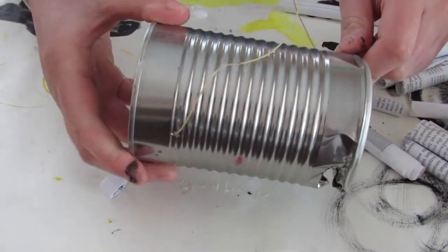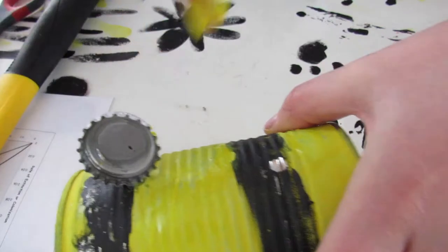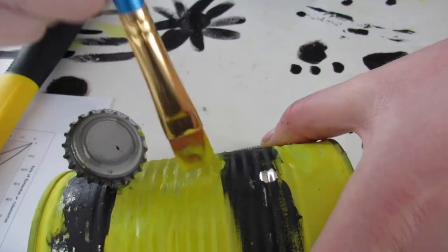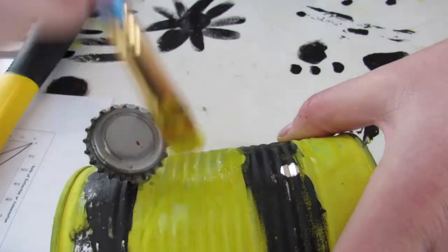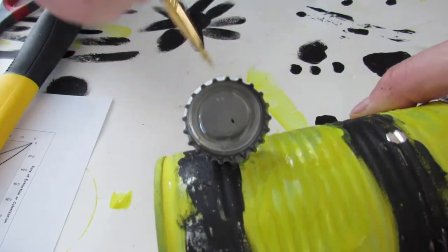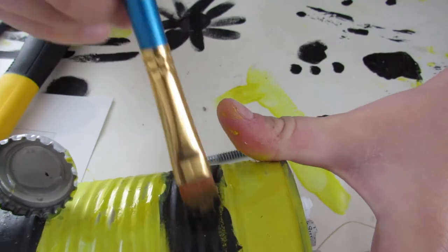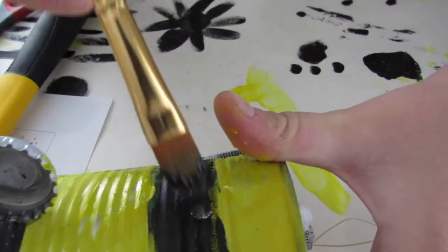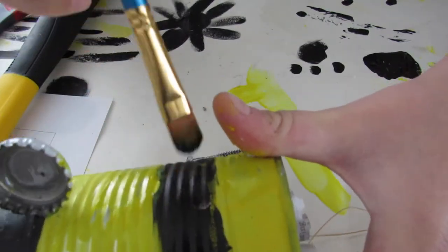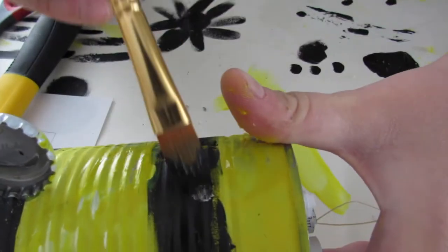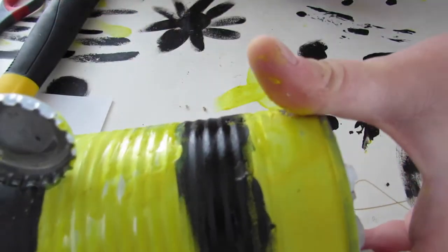The next thing you're going to do is paint your can how you want it. I'm painting mine like a bumblebee using the black and yellow paint. I just painted the body yellow and then just painted two black stripes down the middle. A little sneak peek are some of the bottle caps that we're going to glue on the side. Those are going to be water dishes.